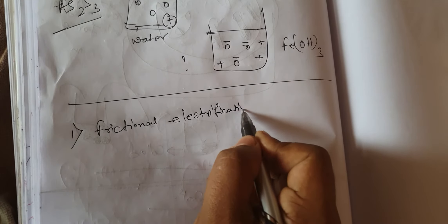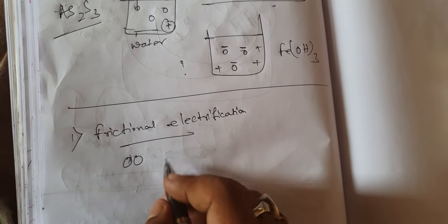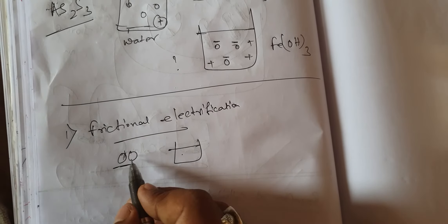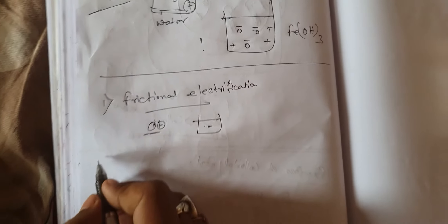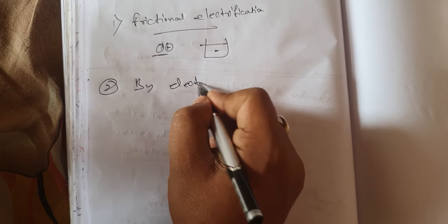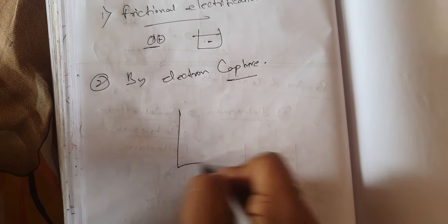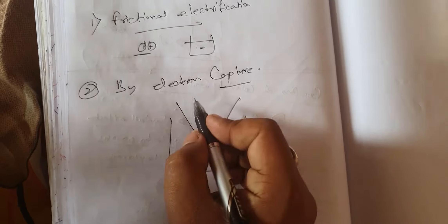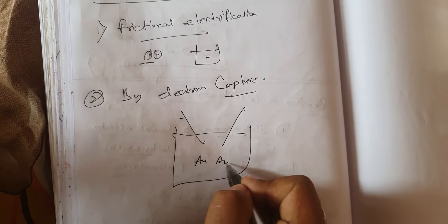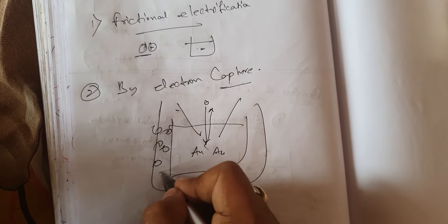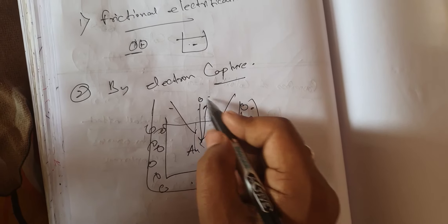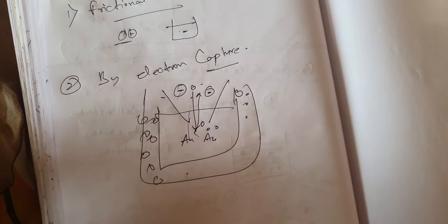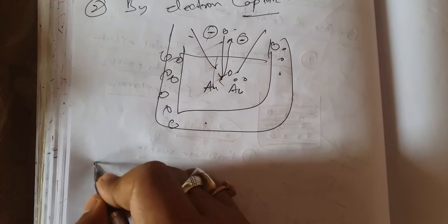In frictional electrification, by mutual rubbing of the colloidal particles with the dispersion medium, they get charged. If one gets positively charged, the other gets negatively charged. The second method is electron capture. In Bredig's arc method, gold electrodes were used; the gold evaporated and then condensed due to ice placed nearby. As the particles settled by condensation, they captured electrons from the medium and became charged.